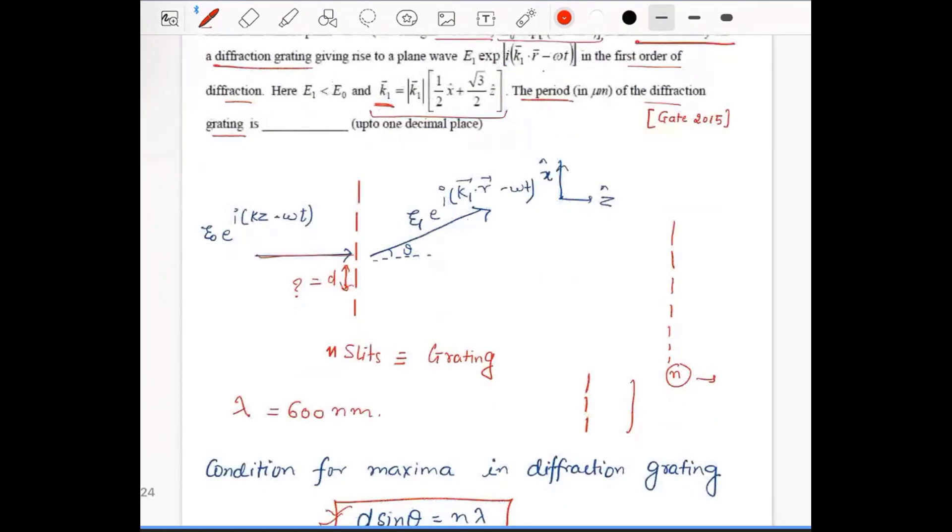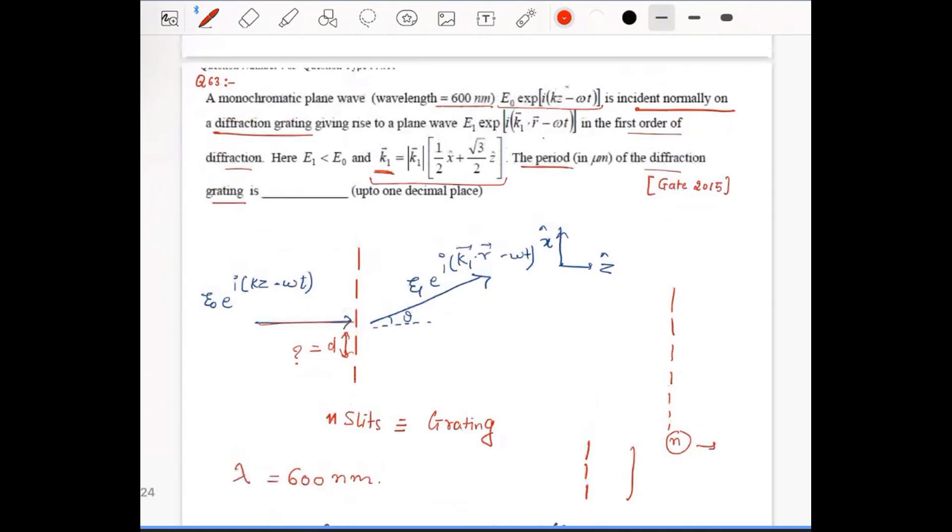You have an incident wave in the z direction. You have a wave which is moving in this direction k1, which has both components x and z. This is your k1 and it makes an angle theta.